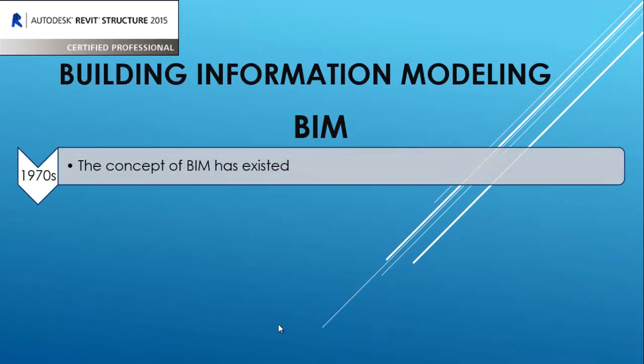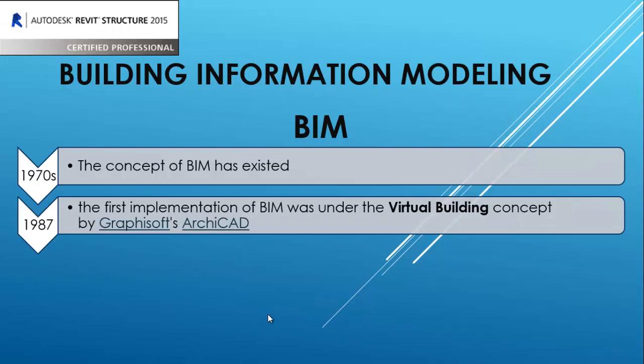The concept of Building Information Modeling has existed since the 70s. In 1987, there was a company called Graphisoft that used a program called ArchiCAD to make something called Virtual Building. The Virtual Building was the first implementation of Building Information Modeling.